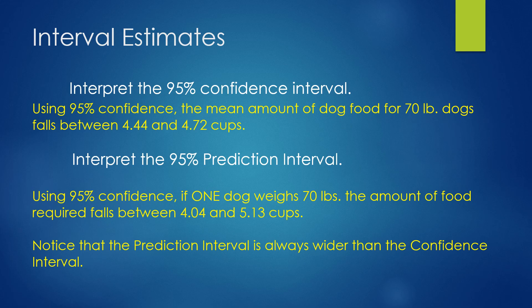So, here are interpretations. The 95% confidence interval would be interpreted as so. Using 95% confidence, the mean amount of dog food for 70 pound dogs falls between 4.44 and 4.72 cups. The important words there are how confident are we, and that the mean amount falls between those two values. In the prediction interval, we say using 95% confidence, if one dog weighs 70 pounds, the amount of food required falls between 4.04 and 5.13 cups. You'll notice that the prediction interval is always wider than the confidence interval.